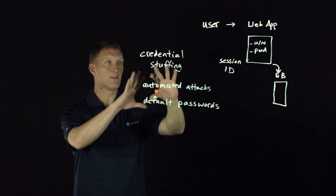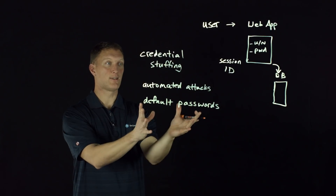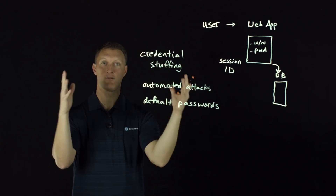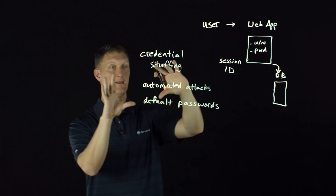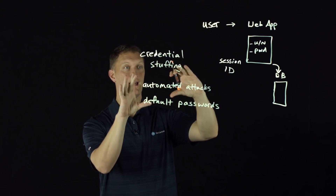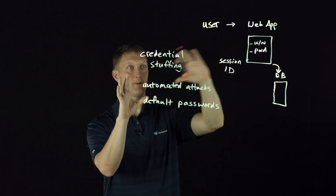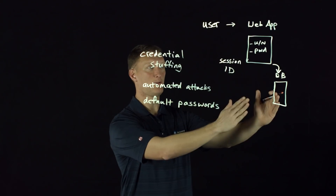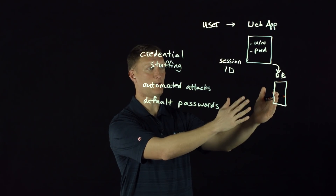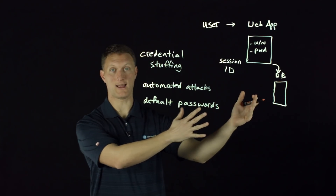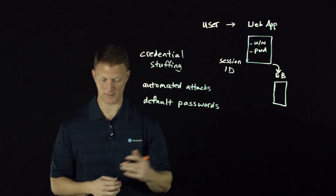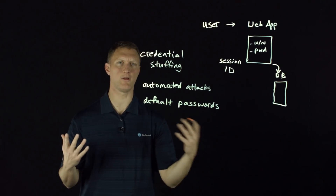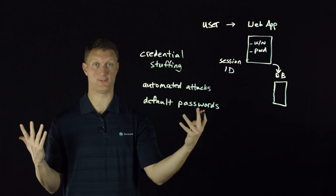All of this falls under the umbrella of broken authentication, because our web application is allowing all these different attacks to let bad guys gain access. So what do you do? How do you solve this?